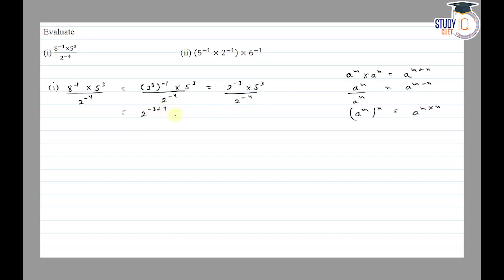is equal to 2 into 5 cube. So this becomes 2 into 5 cube, that is 5 into 5 equals 25, 5s are 125, and 125 times 2 are 250. Then second part is